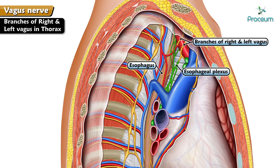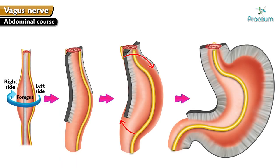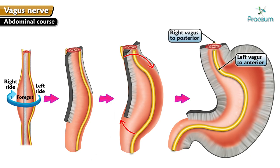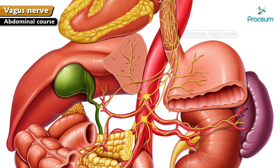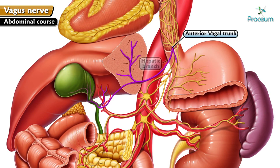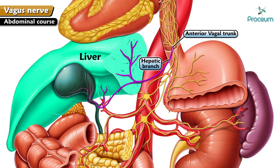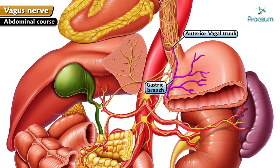During development of the foregut, the stomach rotates 90 degrees clockwise, shifting the left vagus to anterior and the right vagus to posterior. So in the abdomen, anterior and posterior vagal trunks are present. The anterior vagal trunk gives rise to hepatic and gastric branches: hepatic branches supply the liver, gallbladder, and extra biliary system, while gastric branches supply the anterior and superior surfaces of the stomach.